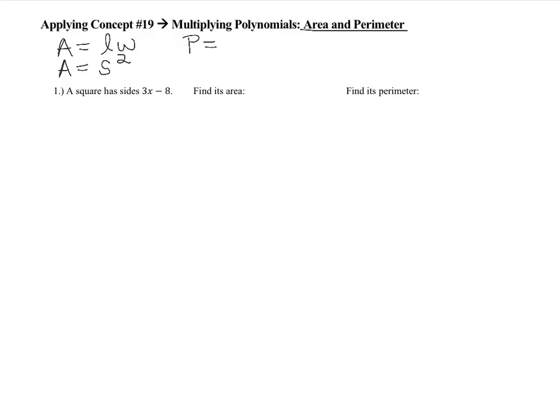Perimeter is when you add up the lengths and widths around the shape. You can just add all sides, but there's a formula for a rectangle: perimeter equals 2 times the length plus 2 times the width, because a rectangle has two equal lengths and two equal widths.